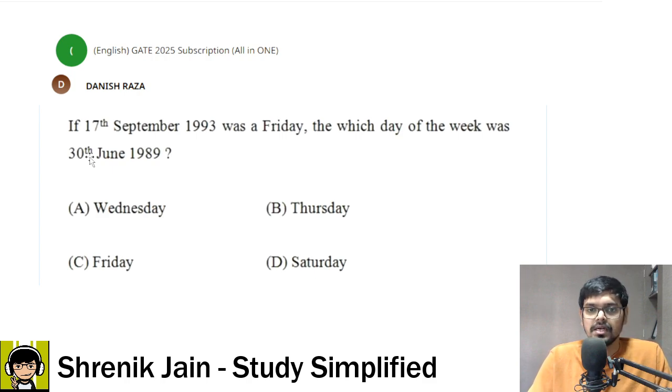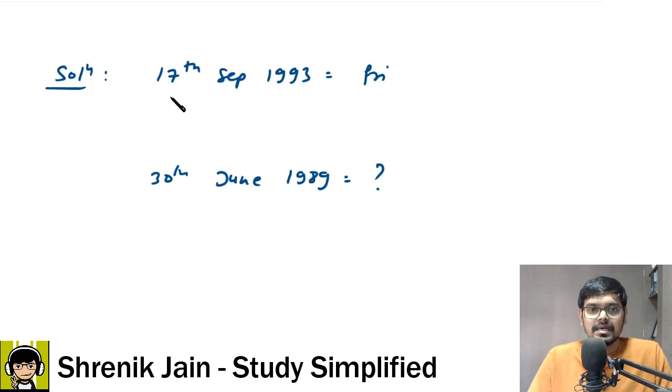The very first step: 17th September 1993 is a Friday and we have to find 30th June 1989, so we have to go backward in the year from 1993 to 1989.